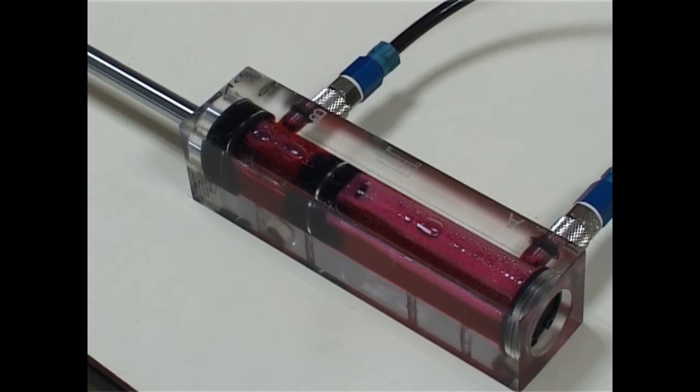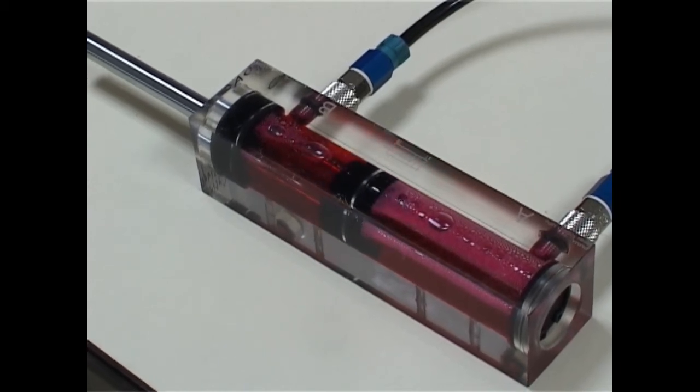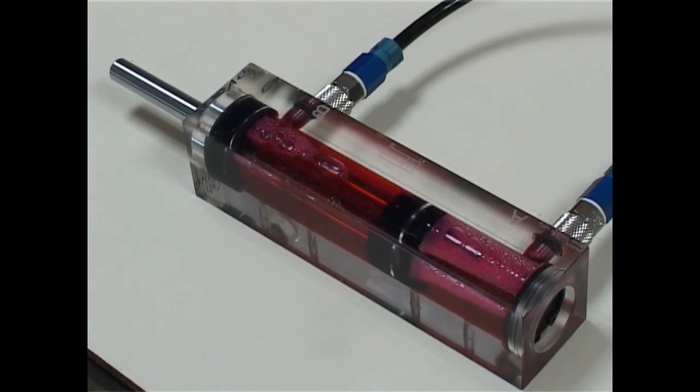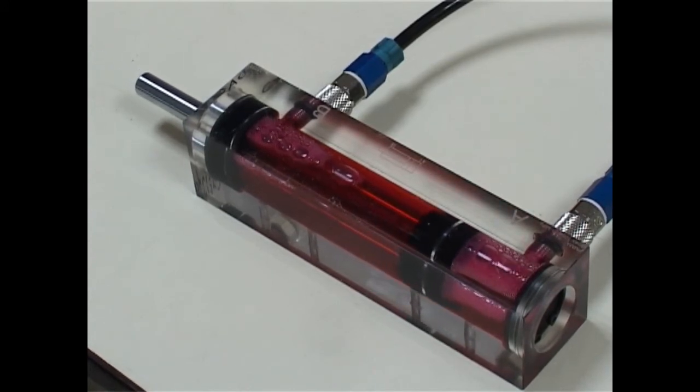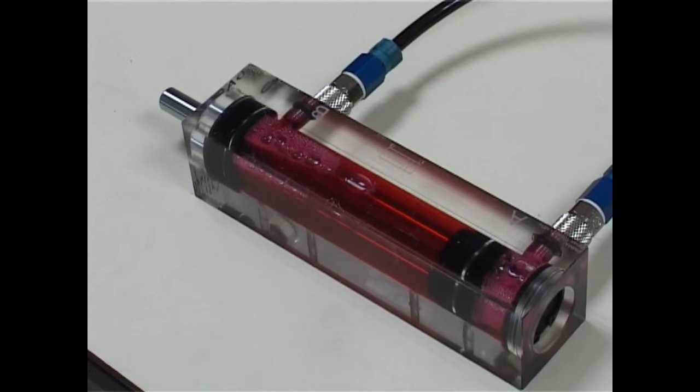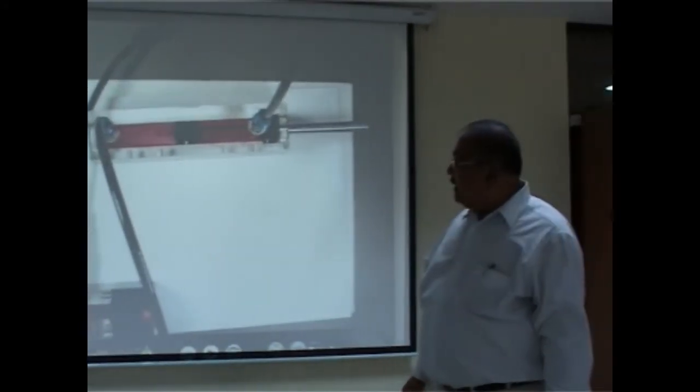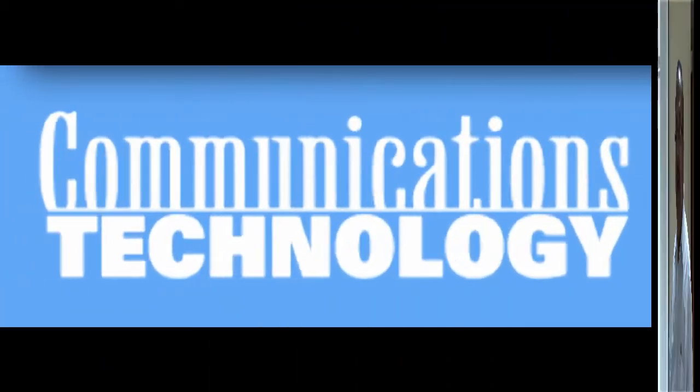Then you can see the flow will be going to the rod side and then piston rod slowly retracts back to its position. So this is the action of actuating a double acting cylinder with a 4x2 directional control valve.